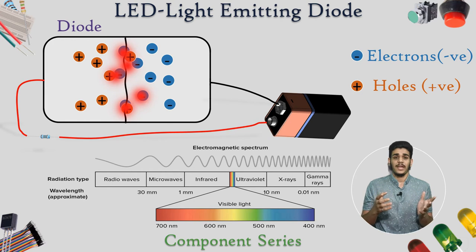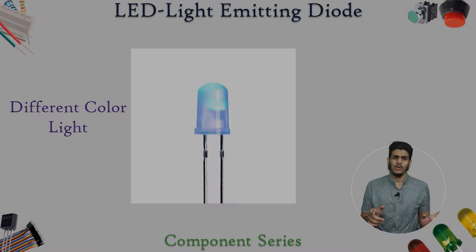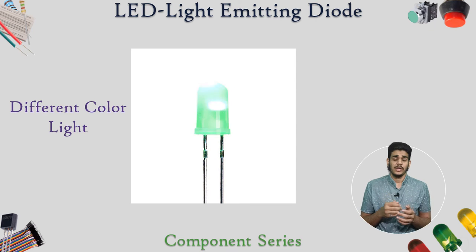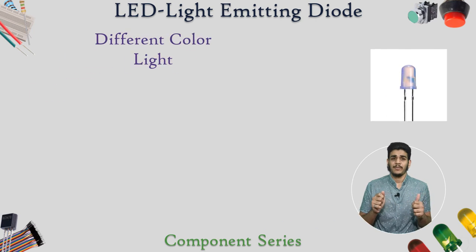So we can see them like we see different colors nowadays in the world. Now how are these different colors obtained like this orange, red, violet, all different types of color of LED we see nowadays. So this is just a play of material.